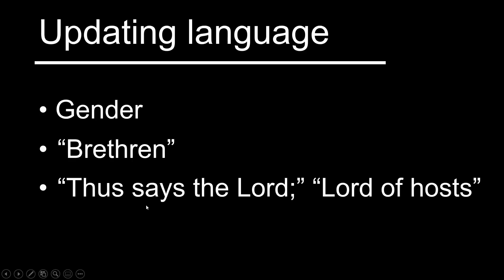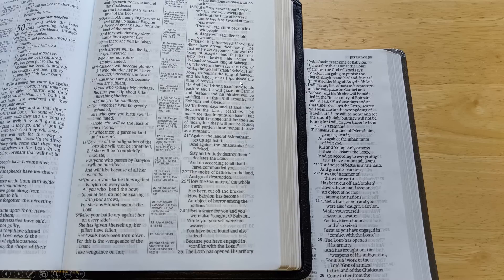Some other phrases I've noticed: 'thus says the Lord' and 'Lord of hosts.' If you're more of a traditionalist you might like these phrases, but they're trying to render the language in contemporary English. In Jeremiah 50:18, the 95 edition says 'therefore thus says the Lord of hosts,' but the newer edition says 'therefore this is what the Lord of armies, the God of Israel, says.' 'Lord of hosts' is now 'Lord of armies' — presumably because many people today may not know what 'hosts' refers to. And instead of 'thus says the Lord,' it now reads 'this is what the Lord says.'